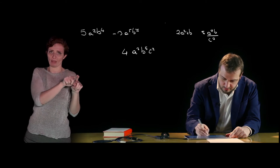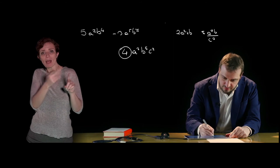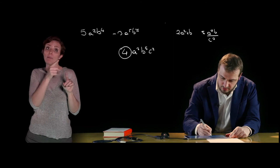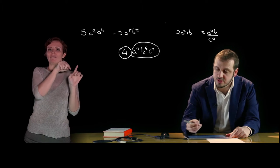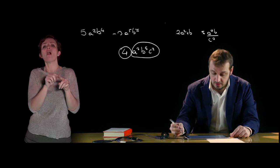Questo viene chiamato coefficiente del monomio, mentre il prodotto tra le varie lettere con le loro esponenti si chiama parte letterale.